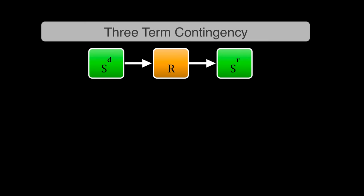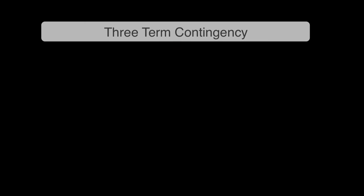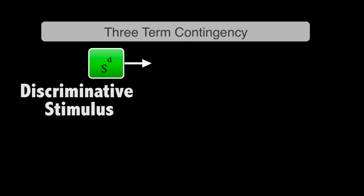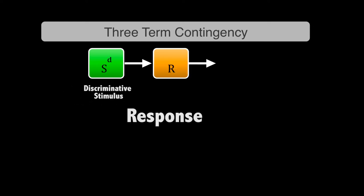All right, so first things first: we have the three-term contingency, that's the basic pieces. The notation we use for that is simple. An SD is the first term, that stands for a discriminative stimulus. It's written with a superscript, so S with a D up in the superscript. Then the second term in the three-term contingency is an R, or a response.